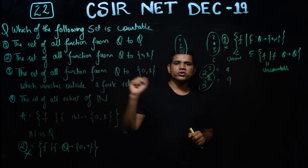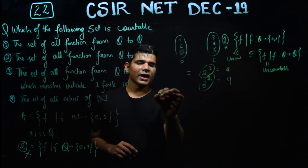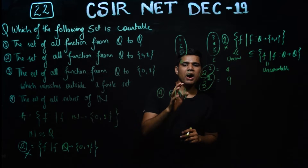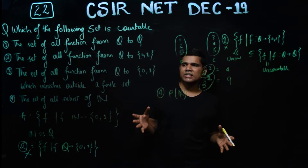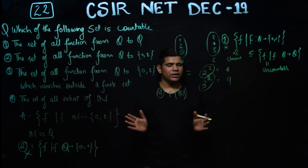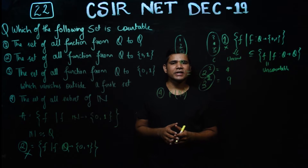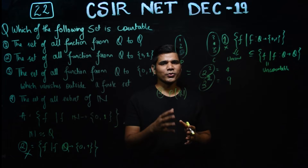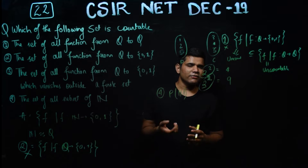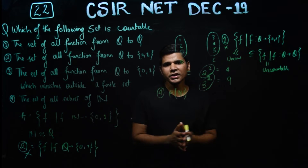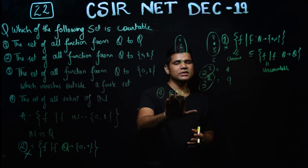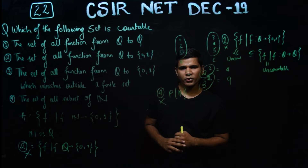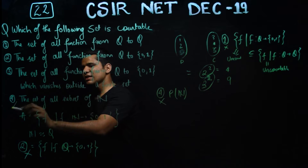For option 4 — the power set of N — since you have studied countability and uncountability, I will not prove it here. It is a well-known fact that the power set of N is uncountable. In fact, uncountability is essentially synonymous with the power set of natural numbers. So option 4 is also uncountable and incorrect.